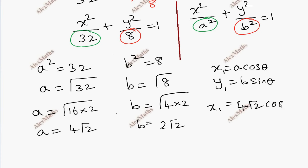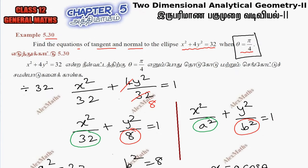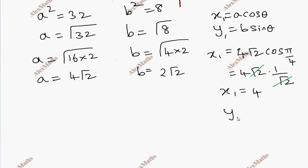When θ = π/4, x₁ = 4√2 cos(π/4) = 4√2 × 1/√2 = 4. And y₁ = 2√2 sin(π/4) = 2√2 × 1/√2 = 2.